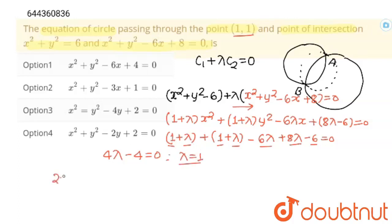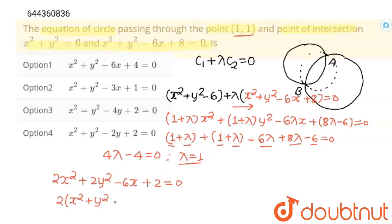Now I am going to put lambda = 1. We will get 2x² + 2y² − 6x + 8·(1) − 6 = 0, which simplifies to 2x² + 2y² − 6x + 2 = 0. Dividing through by 2, we get x² + y² − 3x + 1 = 0, and this is our equation of the circle. Option 2 is correct.